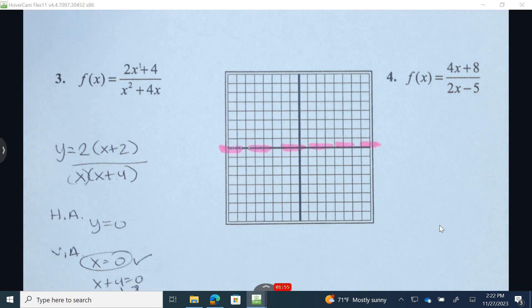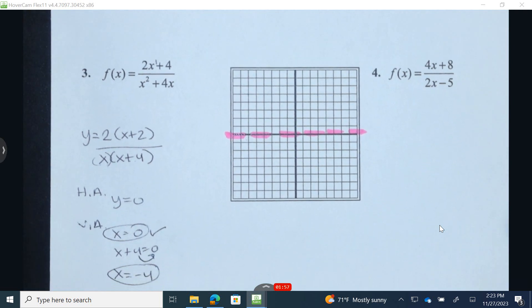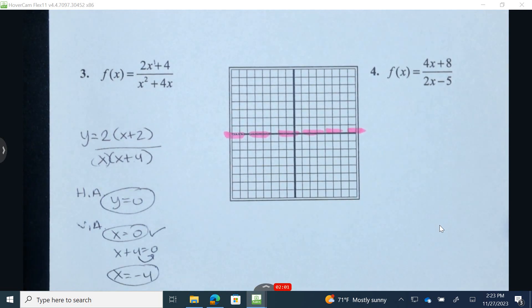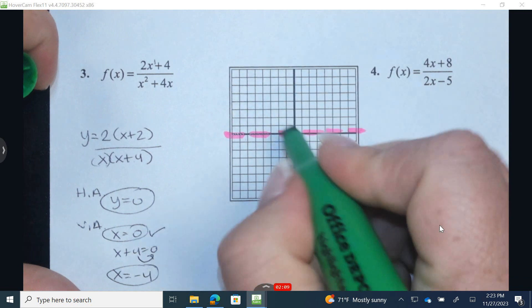We don't want to just put the numerical value of 0 and negative 4. We actually want to write it as an equation, just like I did for the horizontal asymptote. So now I'm going to go to x equals 0 and x equals negative 4, grabbing my highlighter, and I'm going to identify those vertical asymptotes.